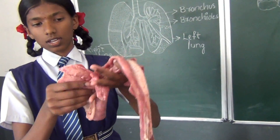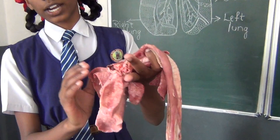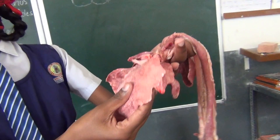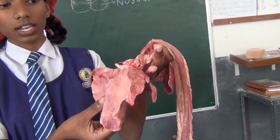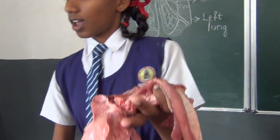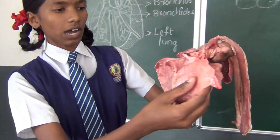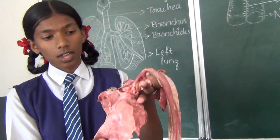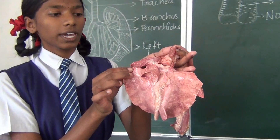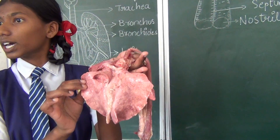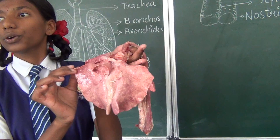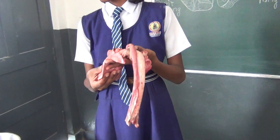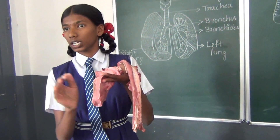Lungs are present on either side of the heart. Lungs are elastic and spongy. These lungs are covered by two membranes called the pleural membrane. The space between the two membranes is filled with pleural fluid. The function of the pleura is to protect the lungs from any injury.